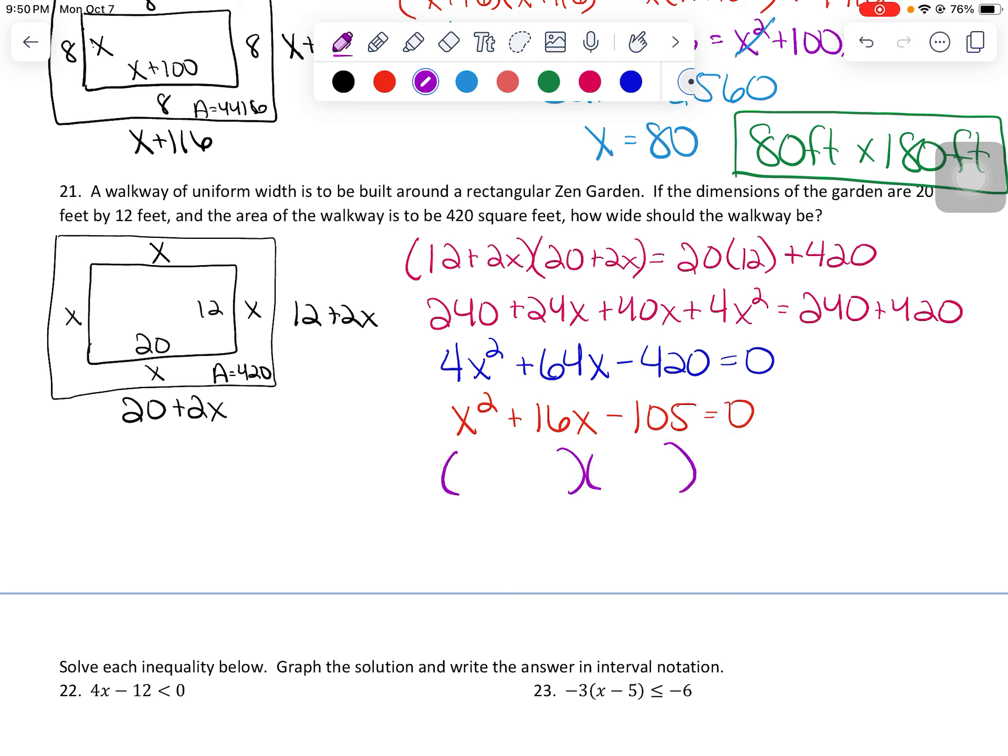I'm going to guess that this is factorable, because when I made the problems, they were all factorable. So things that multiply to 105, let me make a little list off to the side here. So obviously 1 times 105, 2 is not going to work. 3 and 35 is not going to go anywhere for a 16. 5 and 21, that one is a promising one. So if I make positive 21 and negative 5, I like it. That's going to get me X equals negative 21 and positive 5.